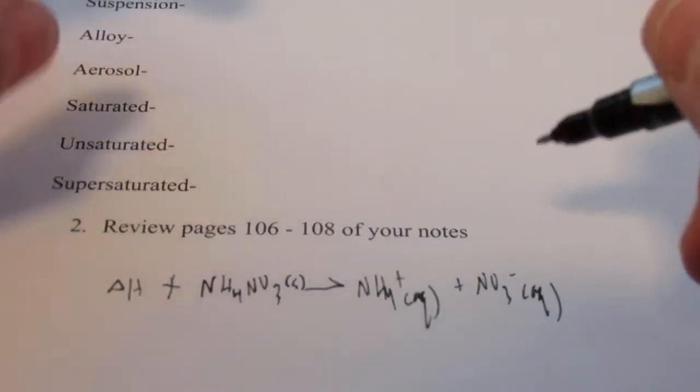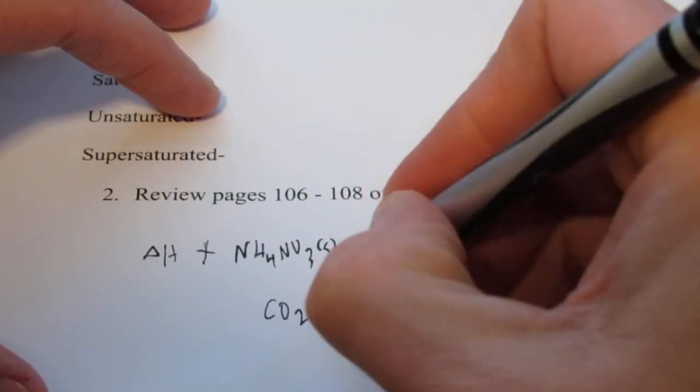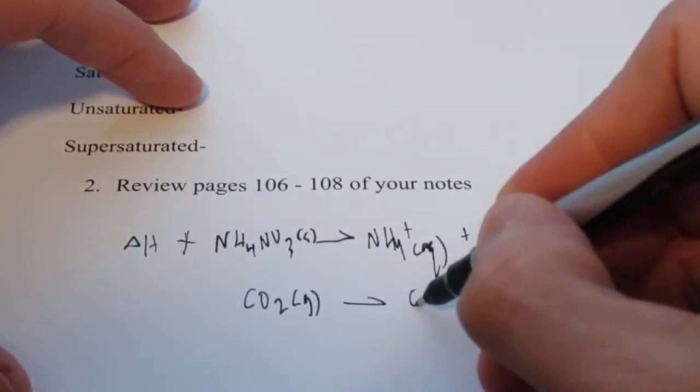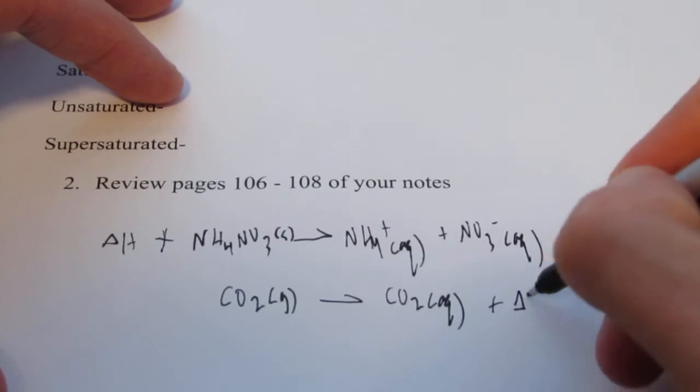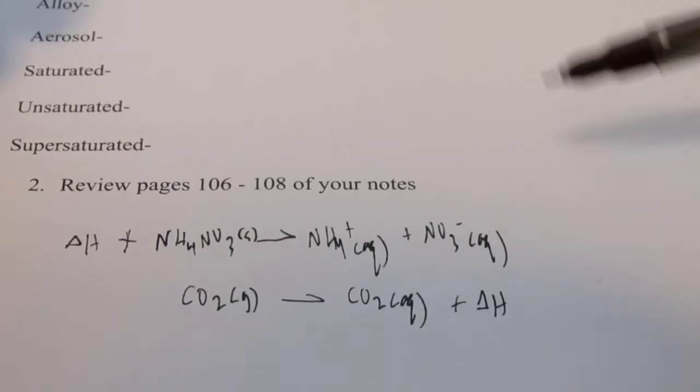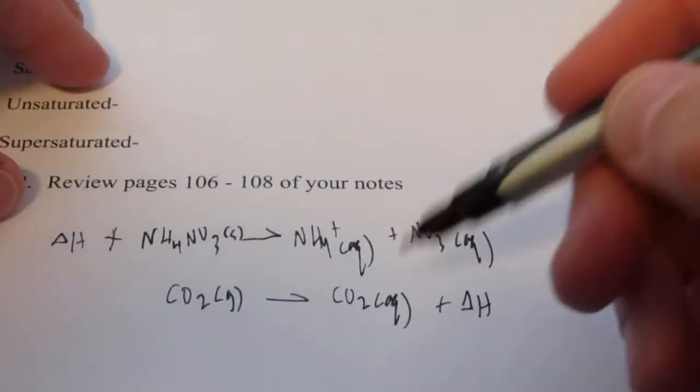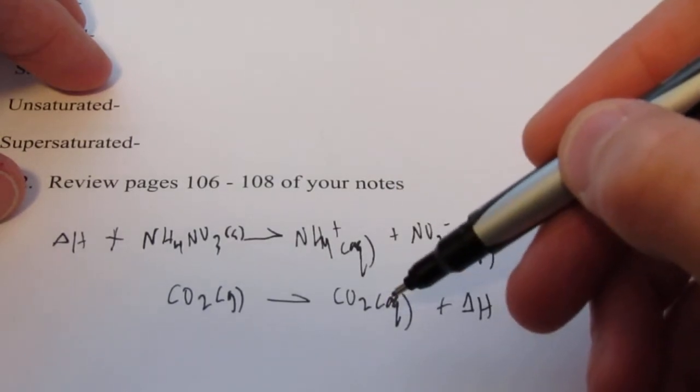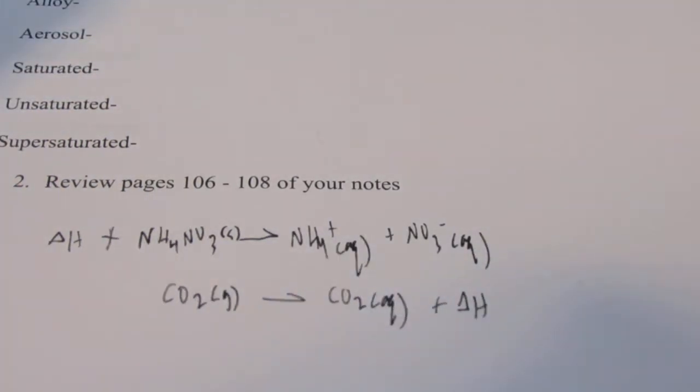Now don't forget most gases dissolve exothermically. So if I took CO2 gas and turned that into CO2 aqueous, heat would be on the right hand side. That means if I cooled this down, if I made it cold, the reaction would go to the right towards the heat. And I would make more gas dissolved in water. AQ remember means aqueous or dissolved in water. And all gases dissolve this way. All gases dissolve better in cold solvents. So keep that in mind.